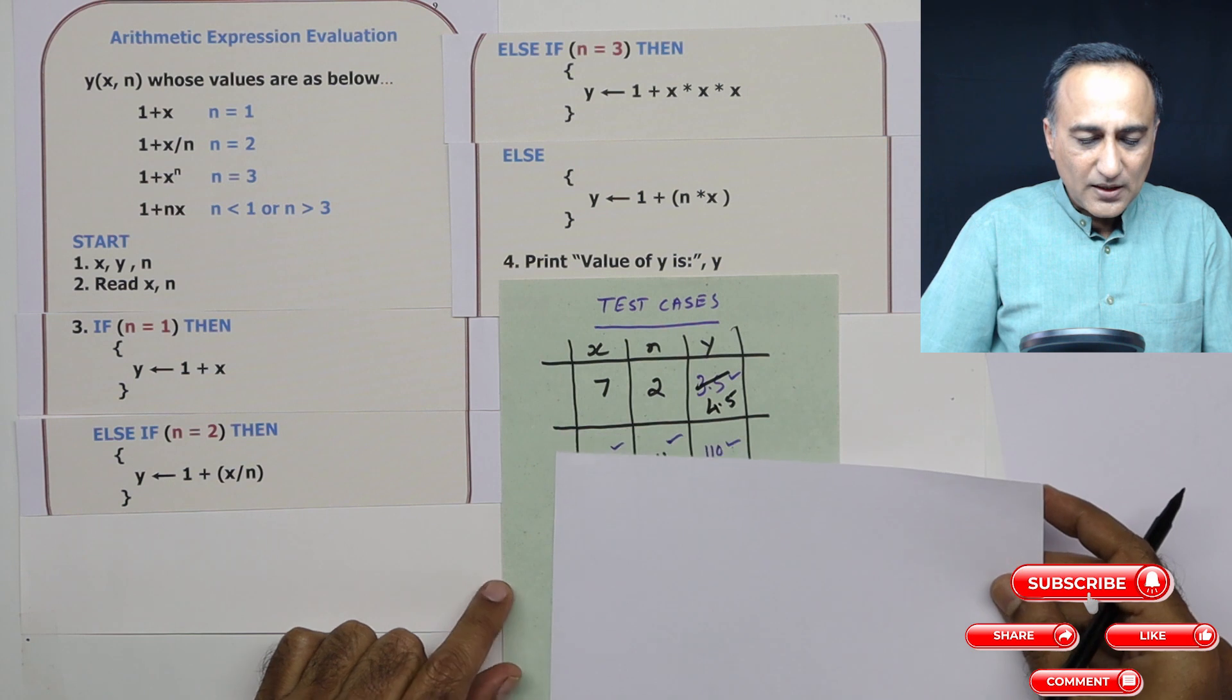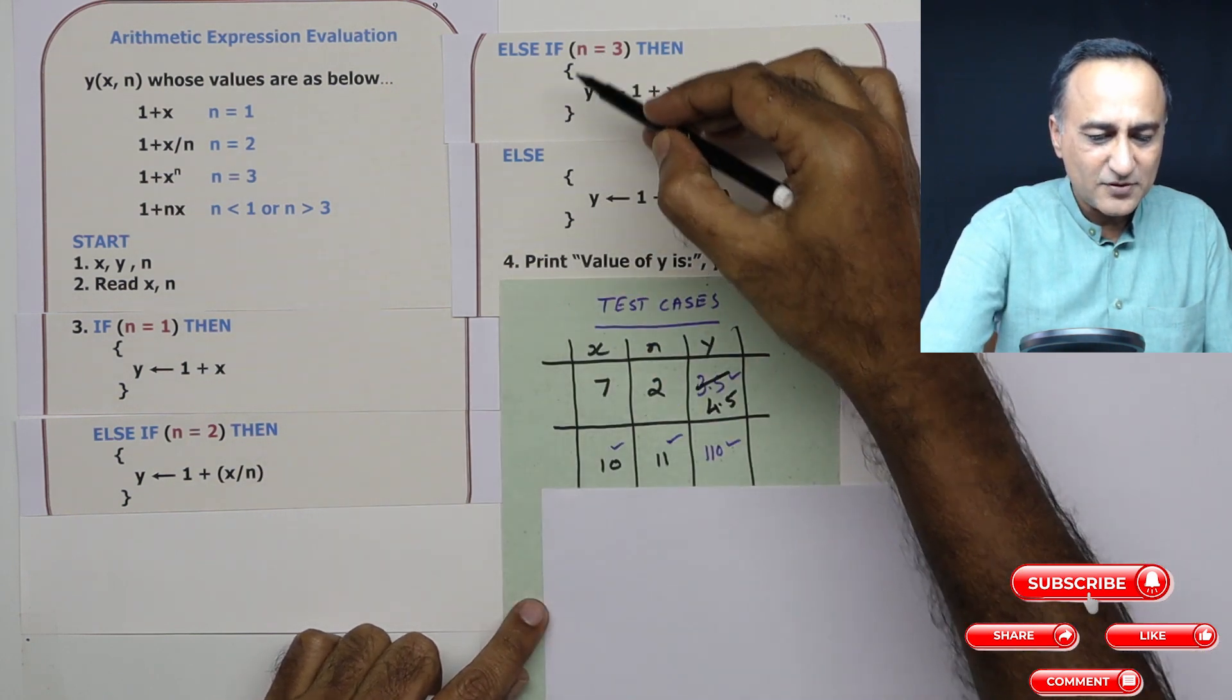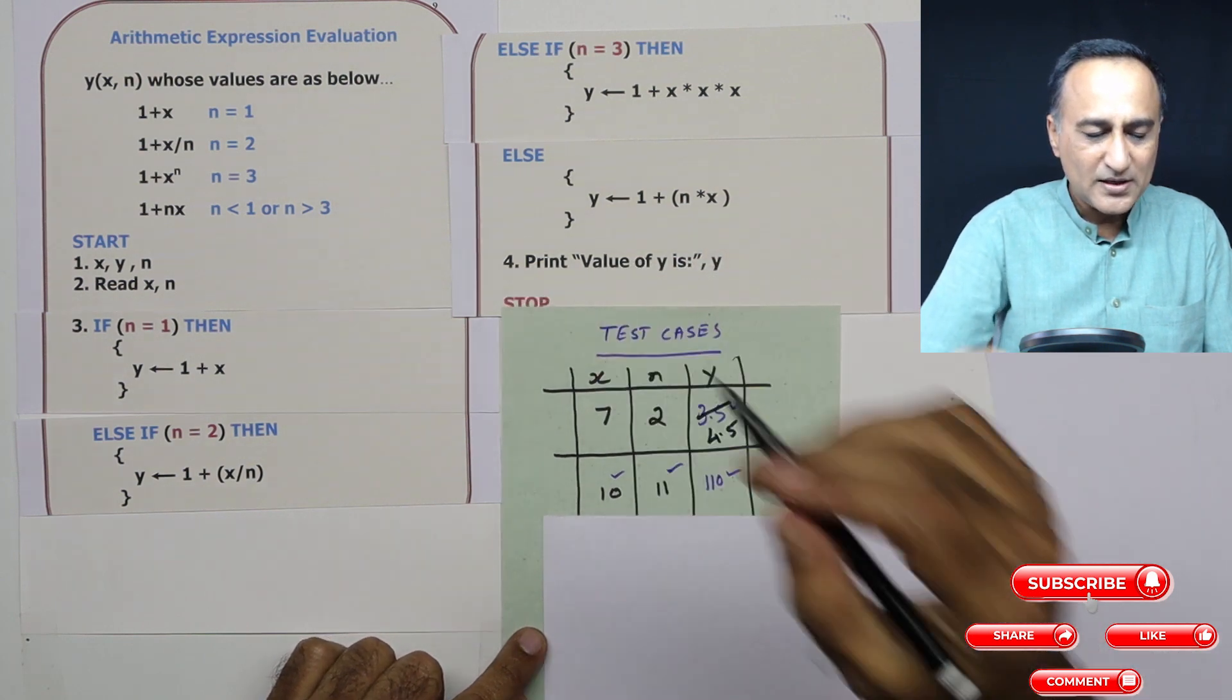Now, next step. So after this is done, neither of these are true. So it will print the value of y as 4.5 and then it will stop.